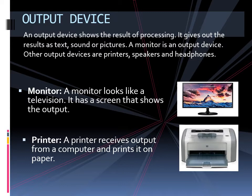Monitor. A monitor looks like a television. It has a screen that shows the output. A printer receives output from a computer and prints it on paper.